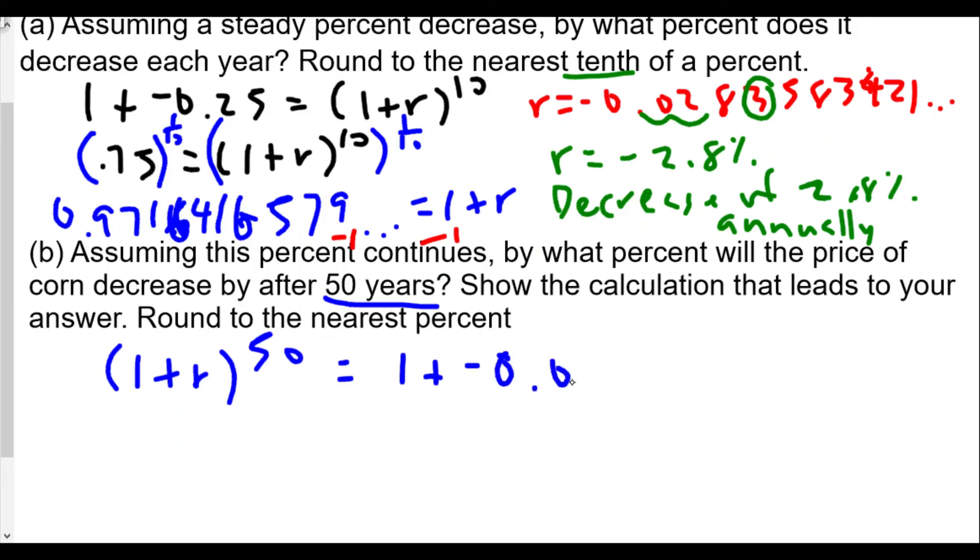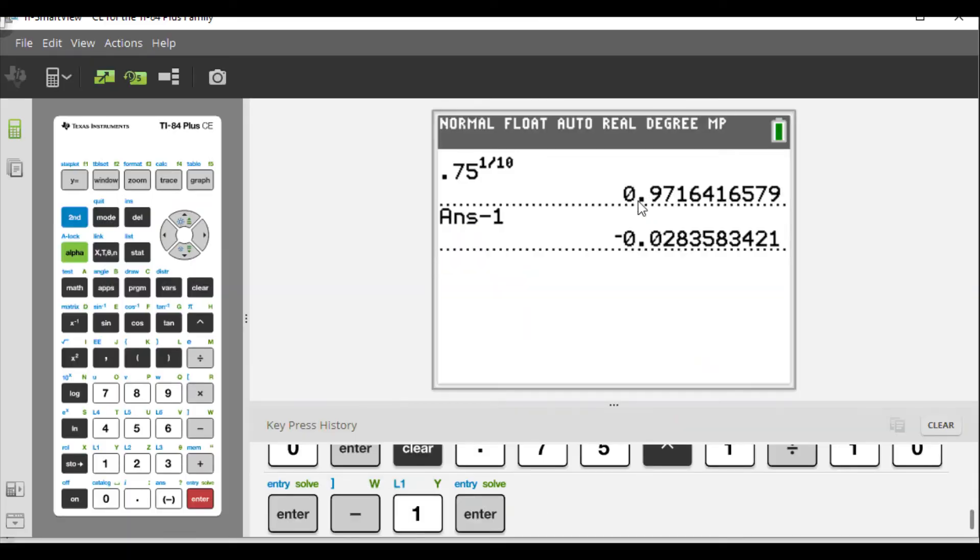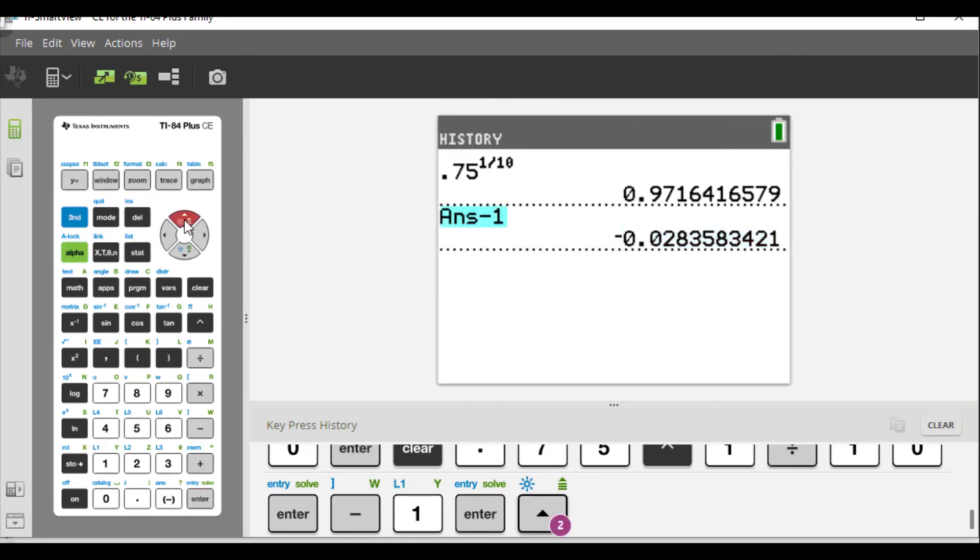So really it's going to be equal to 1 plus negative 0.0283583421, and we're going to raise all this to the 50th power. The very nice thing is we have this number already set in our calculator - that 1 plus rate is already set up. So we're going to take this and raise it to the 50th power.